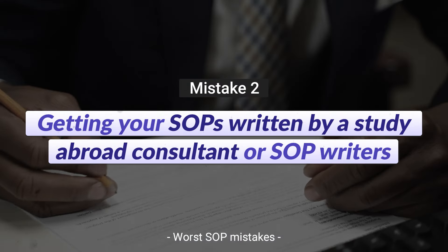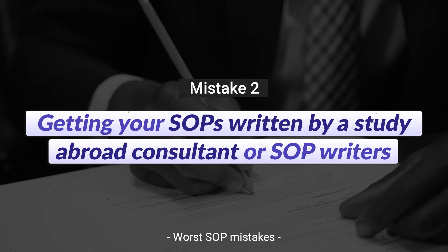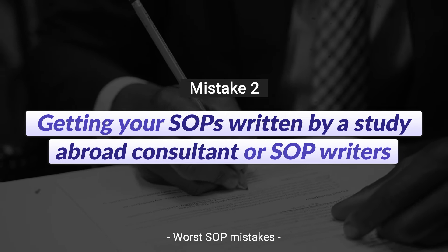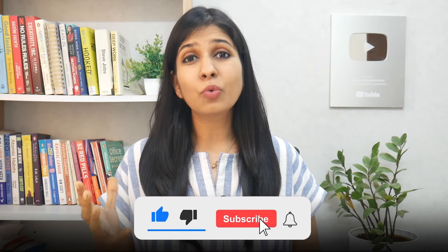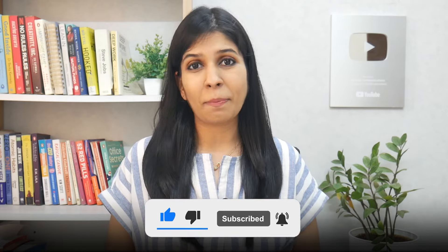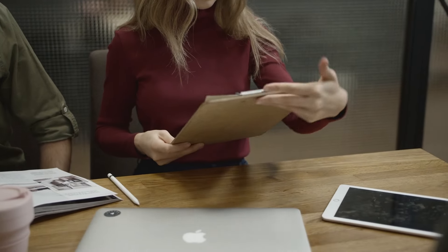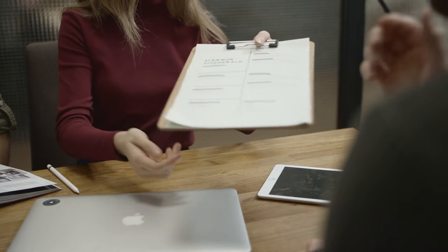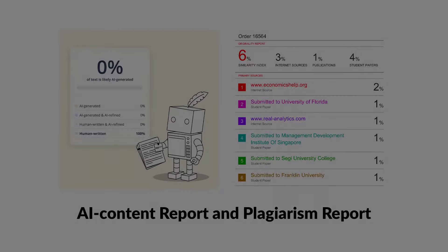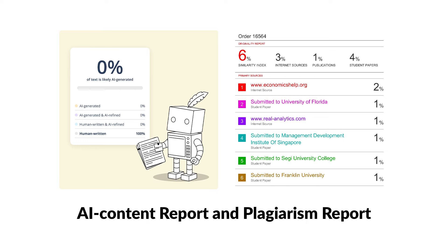The second big mistake that students are making is getting their SOPs written by study abroad consultants and SOP writers. Most of these consultants and SOP writers have a fixed template of an SOP. When you share your projects, work experiences, and extracurricular information with them, they fit all this information within this template and share it with you. When you get the SOP, you feel it is such a nice and customized document — but the truth is, it cannot be more impersonal than this. You might think they've also given you an AI report and plagiarism report saying your SOP is completely free of AI-generated content and plagiarism.